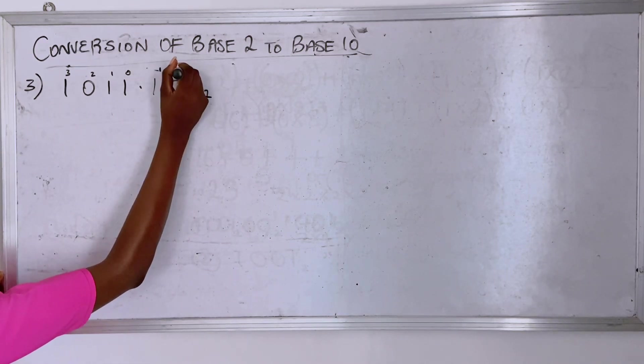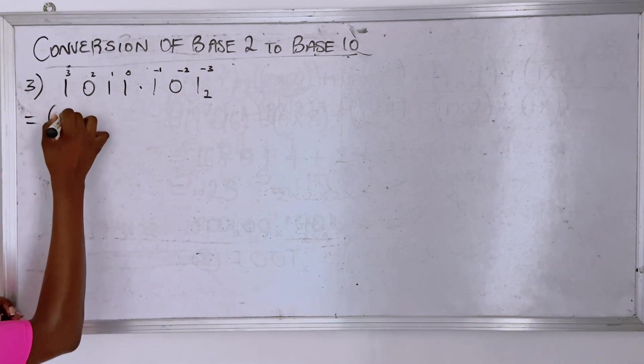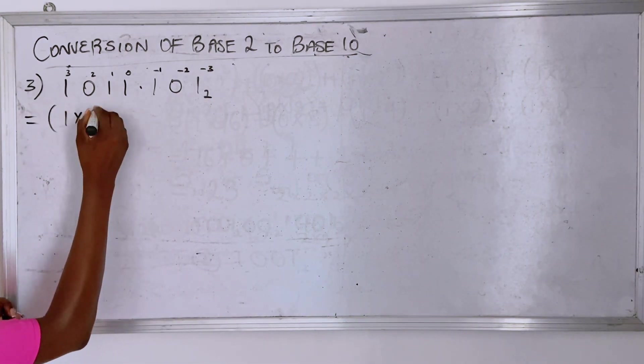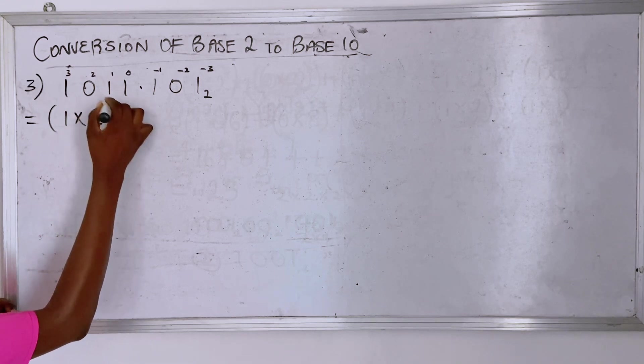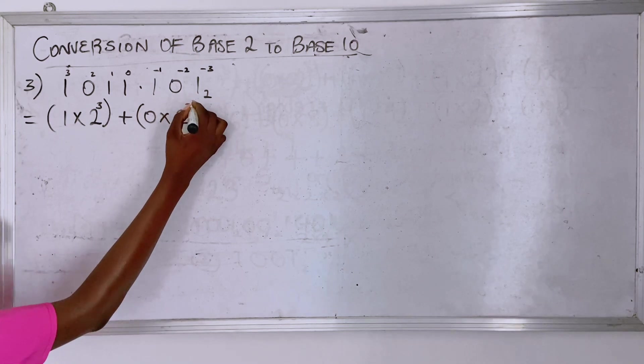We have one times your base raised to its power, and then we have zero times your base raised to its power.